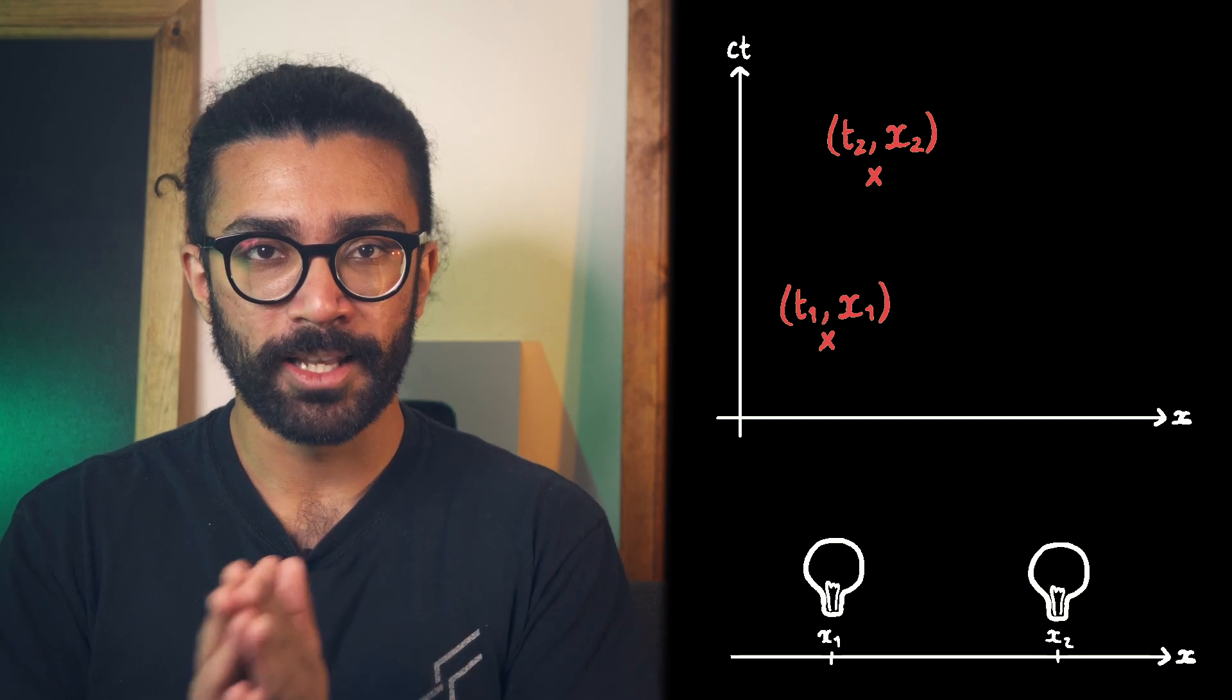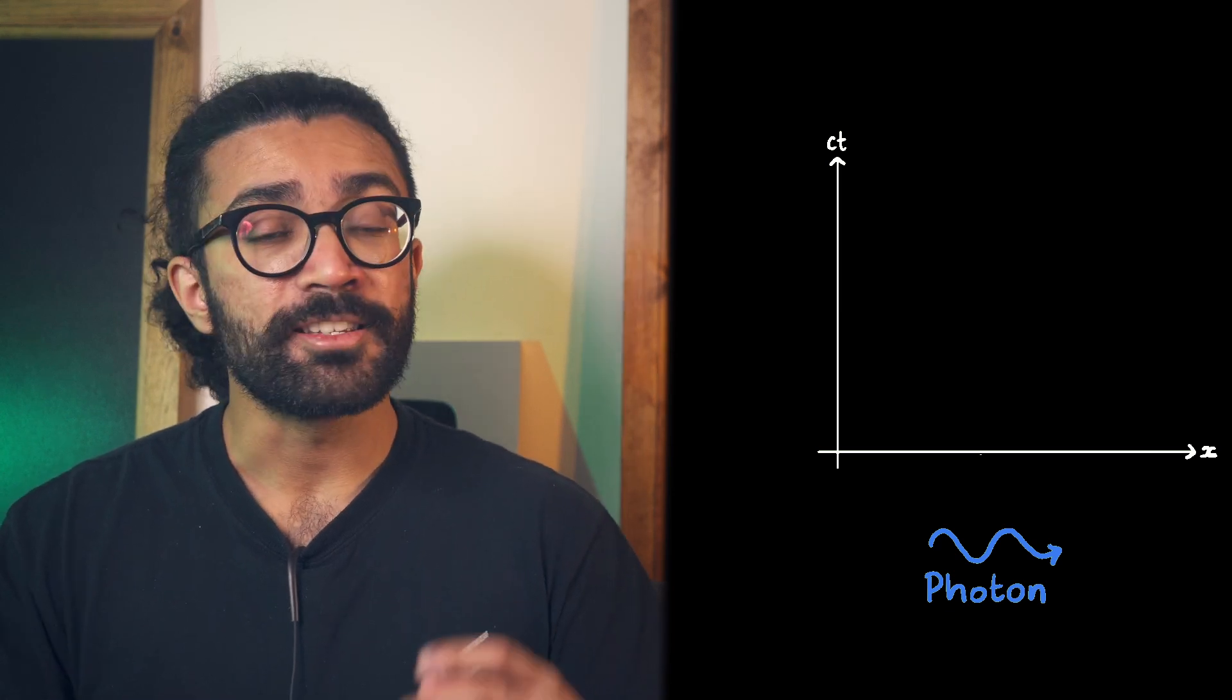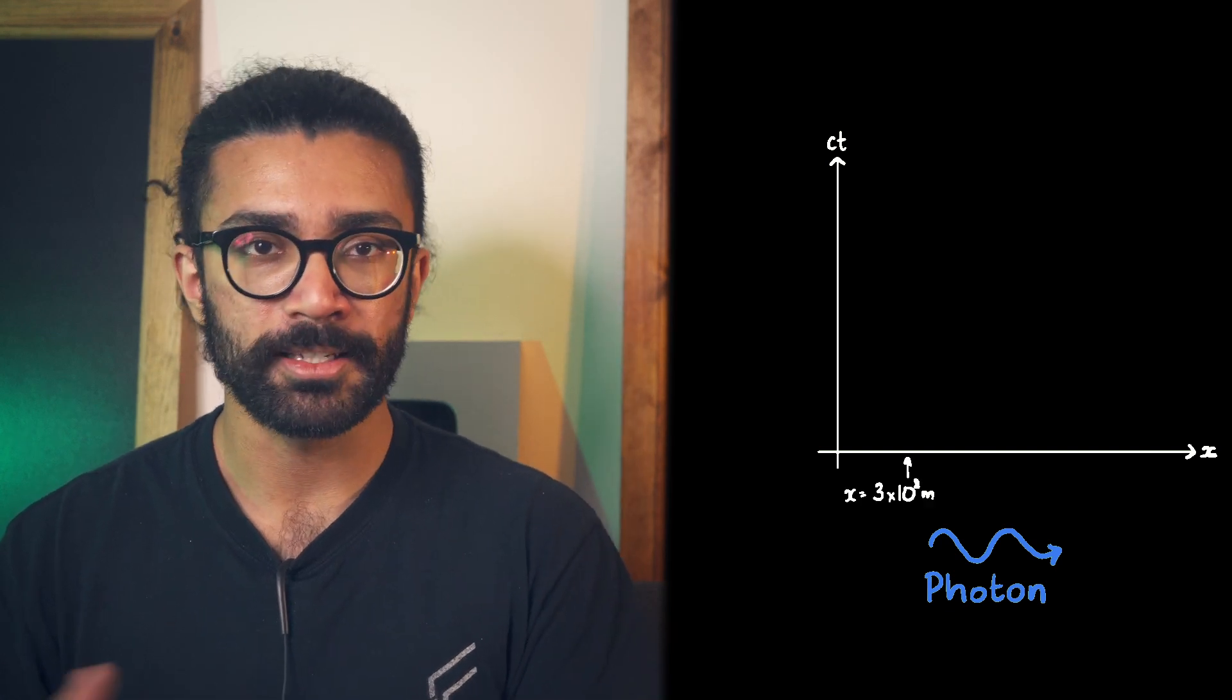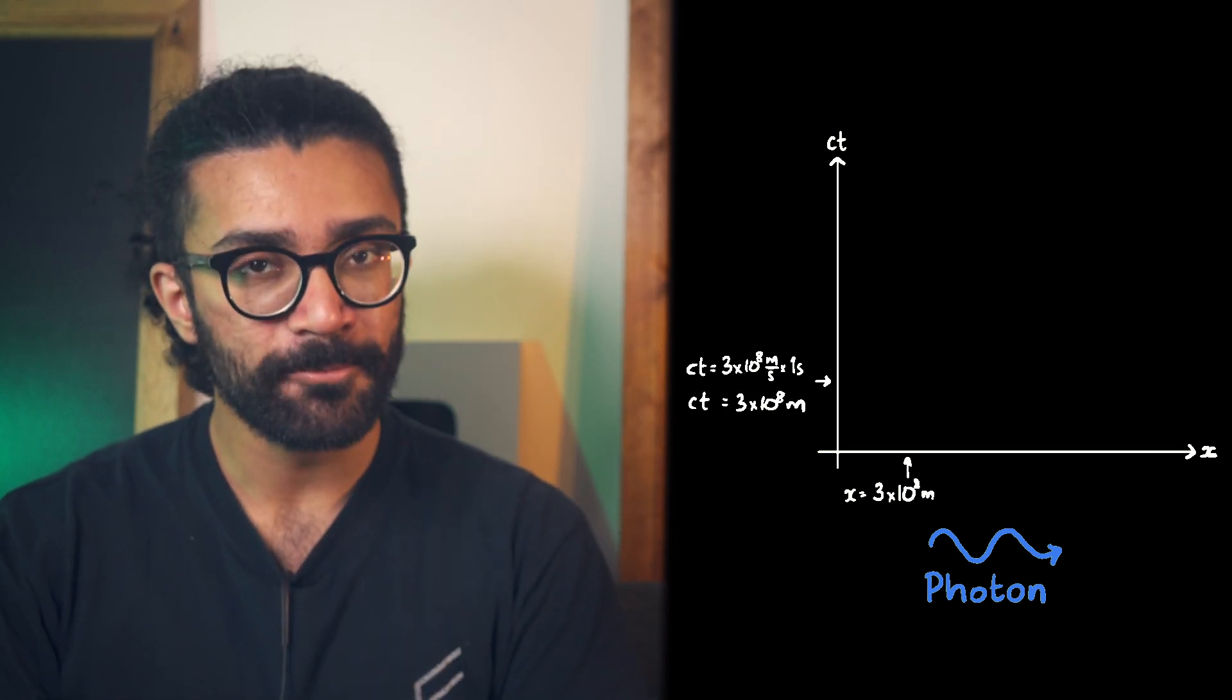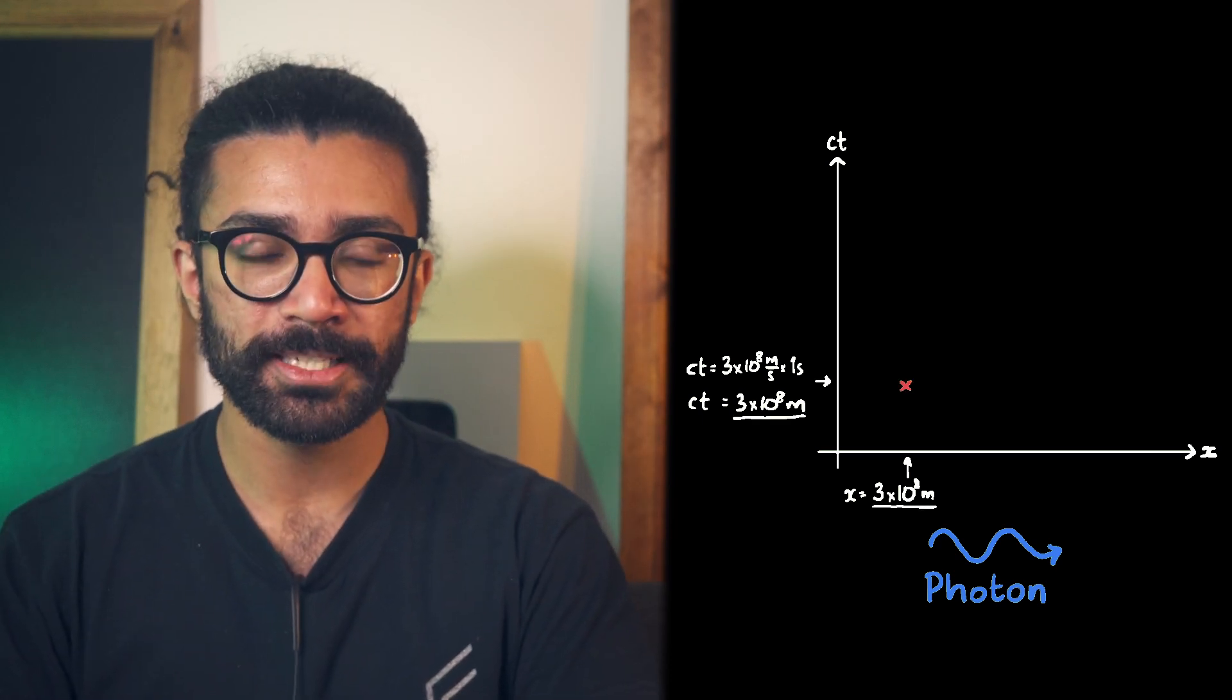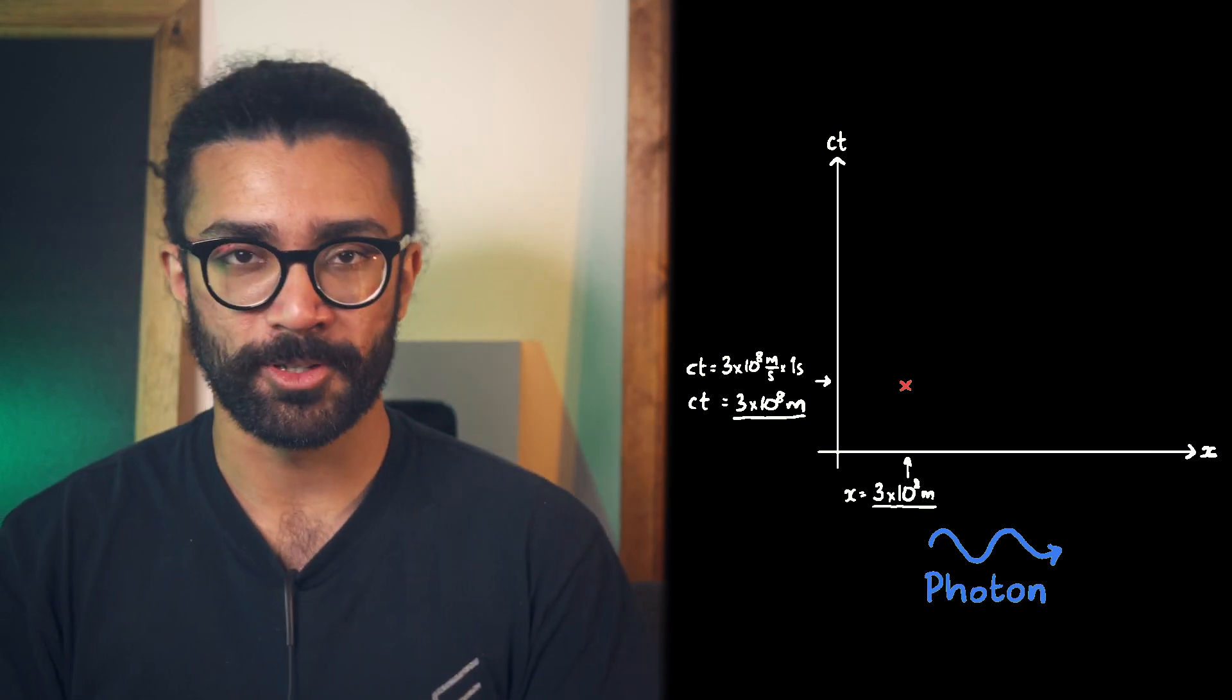For an object moving at the speed of light, such as a photon, we can draw its world line on our space-time diagram. Its speed is of course c, the speed of light, so it moves this distance in a time of one second. Now remember, on this axis we're plotting ct, not just time by itself. So this axis will have the same numerical value plotted on it as we do for the horizontal axis. We can think about what would happen at a time of two seconds, for example.